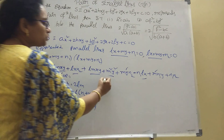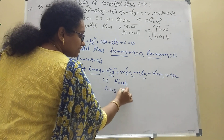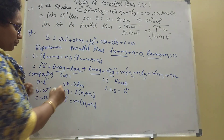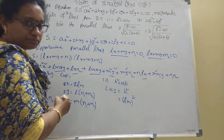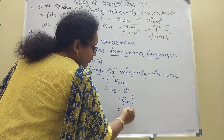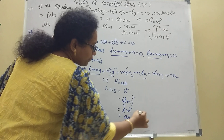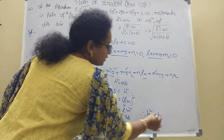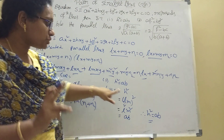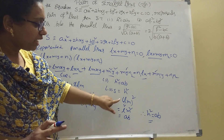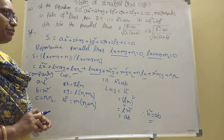First part: prove h² = ab. Taking LHS, h = lm, so h² = (lm)² = l²m². Since a = l² and b = m², we get l²m² = ab. Therefore h² = ab. First part is proved.